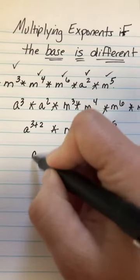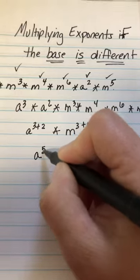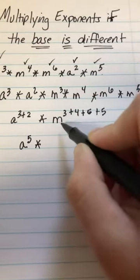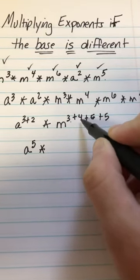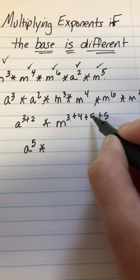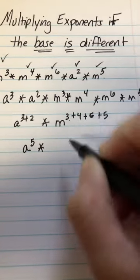So a 3 plus 2 is 5. A to the fifth times 3 plus 4 is 7. 7 plus 6 is 13 plus 5 is 18. So m to the 18th.